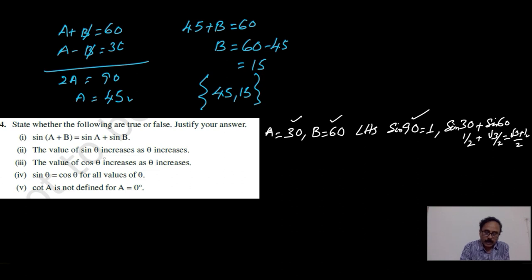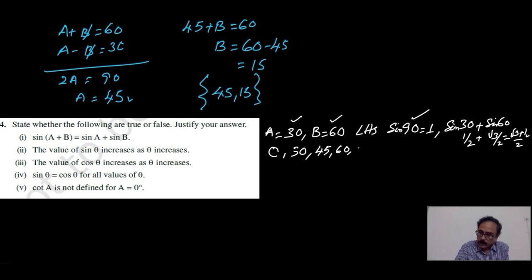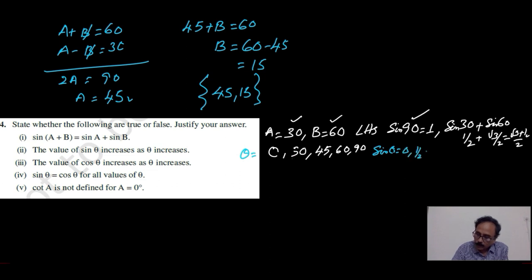Now, the value of sinθ increases as θ increases — this is true of course. We have written sin0 as 0, then sin30 as half, sin45 as 1 by root 2, sin60 as root 3 by 2, and sin90 as 1. When you are increasing θ, these are the values, and writing the corresponding sinθ: when θ equals 0, sinθ is 0; when θ equals 30, sinθ is half; when θ is 45, sinθ is 1 by root 2; when θ is 60, it is root 3 by 2; when θ is 90, it is 1. So we can clearly see it is raising from 0 to 1.